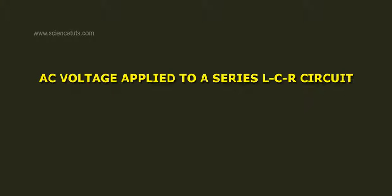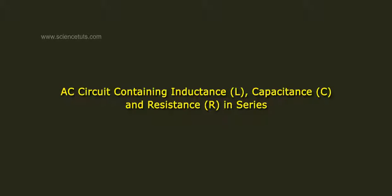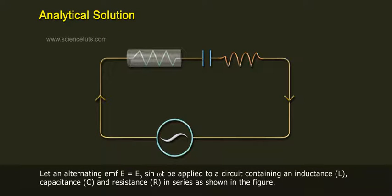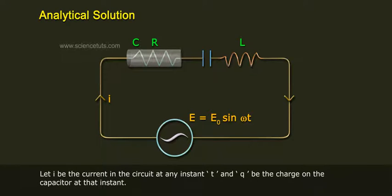AC Voltage Applied to a Series LCR Circuit. Consider an AC circuit containing inductance L, capacitance C, and resistance R in series. Let an alternating EMF E equals E0 sin(ωt) be applied to this circuit, as shown in the figure. Let I be the current in the circuit at any instant t.